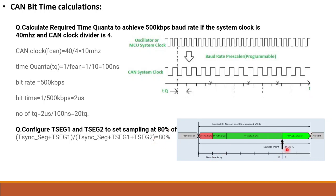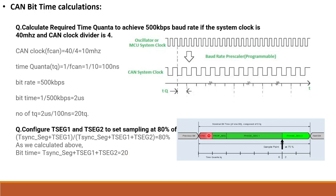We have 80% sampling point. We calculate a total time quanta count of 20. The nominal bit timing equals T-sync segment plus T-segment 1 plus T-segment 2. The total 20 time quanta is the nominal bit timing.